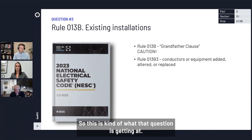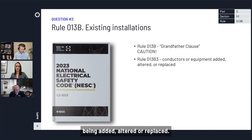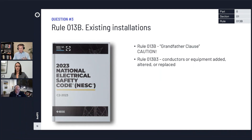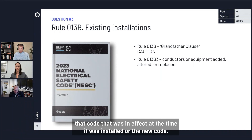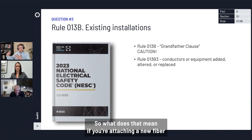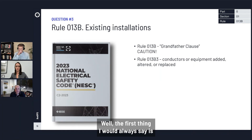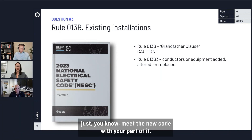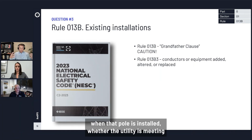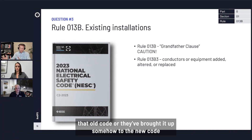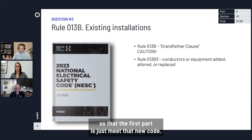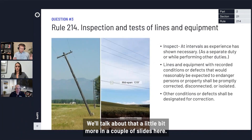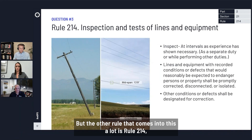Rule 013 b3 talks about conductors or equipment being added, altered, or replaced — and when that work is done, the resulting structure has to meet either the code that was in effect at the time it was installed or the new code. So what does that mean if you're attaching a new fiber optic cable? The first thing I would always say is just meet the new code with your part of it. You don't usually know, as an attaching entity, whether the utility is meeting that old code or has brought it up to the new code.